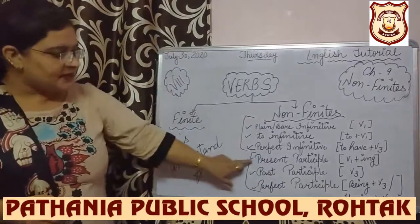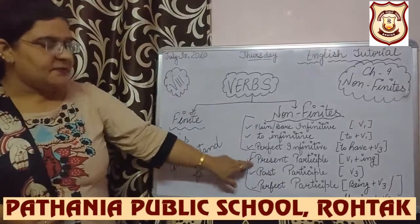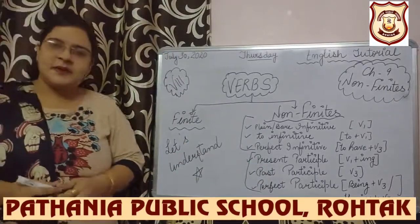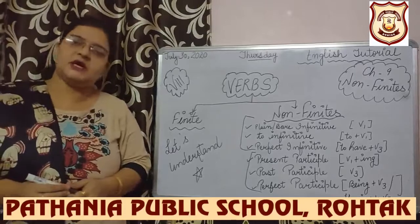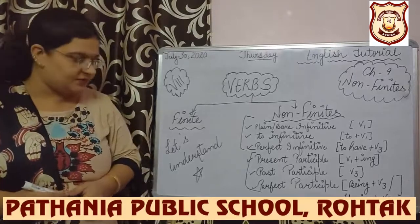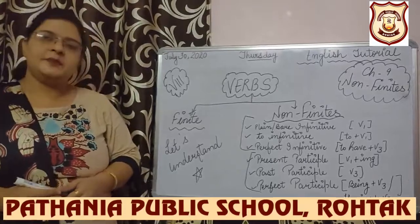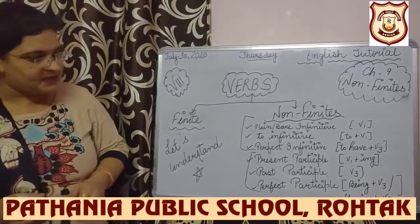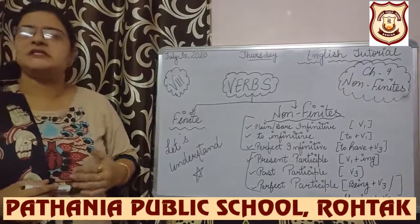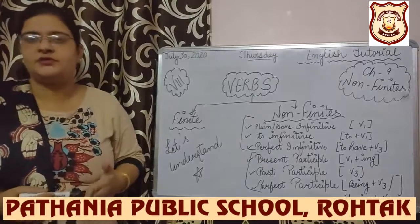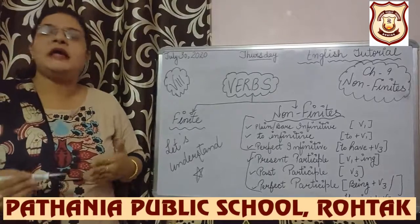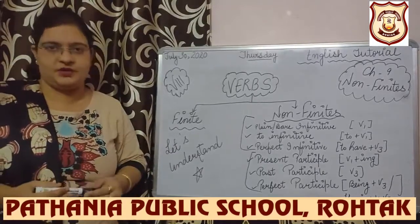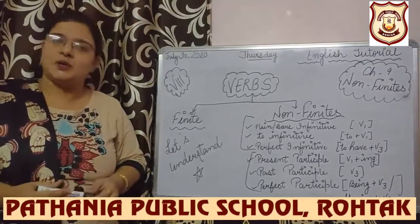Present participle means first form plus '-ing'. Past participle means the third form of the verb. And perfect participle means 'being' plus third form of the verb, or 'having' plus third form of the verb.